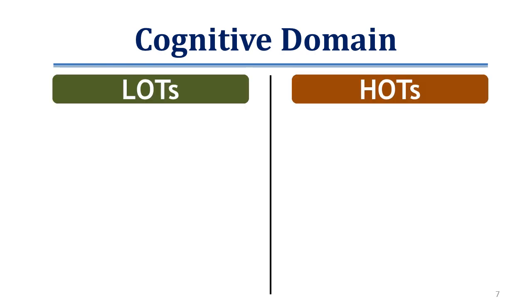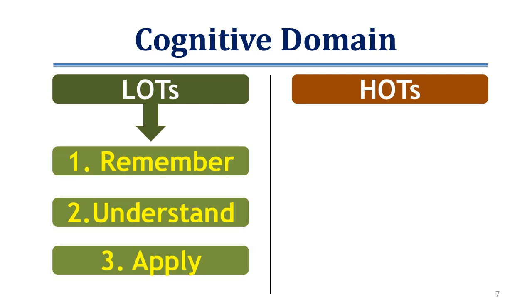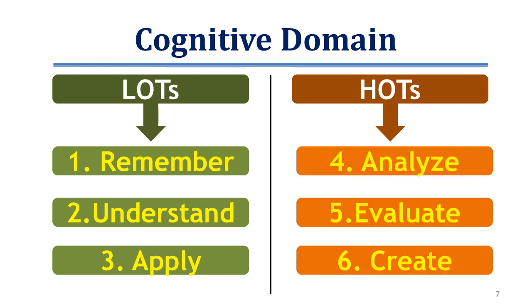The cognitive domain is subdivided into six subdomains, categorized into lower order thinking and higher order thinking. Lower order thinking includes remember, understand, and apply. In traditional teaching methods, we more often focus only on these levels, which leads to a lack of skill development in students. Higher order thinking domains — analyze, evaluate, and create — are commonly known as HOTS. To reach HOTS, one must go through LOTS: you cannot understand without remembering, and likewise you cannot create without first developing prior levels.